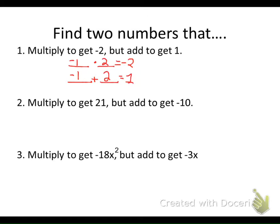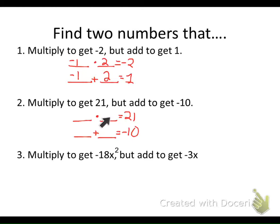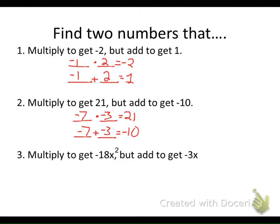In our second example, we want our two numbers to multiply to give us 21, but when we add those same two numbers together we get negative 10. My numbers are going to multiply to give me a positive, so both could be positive or both could be negative. Thinking of factors of 21 — 7 and 3. If I make them both negative: negative 7 times negative 3 is positive 21, and negative 7 plus negative 3 is negative 10.